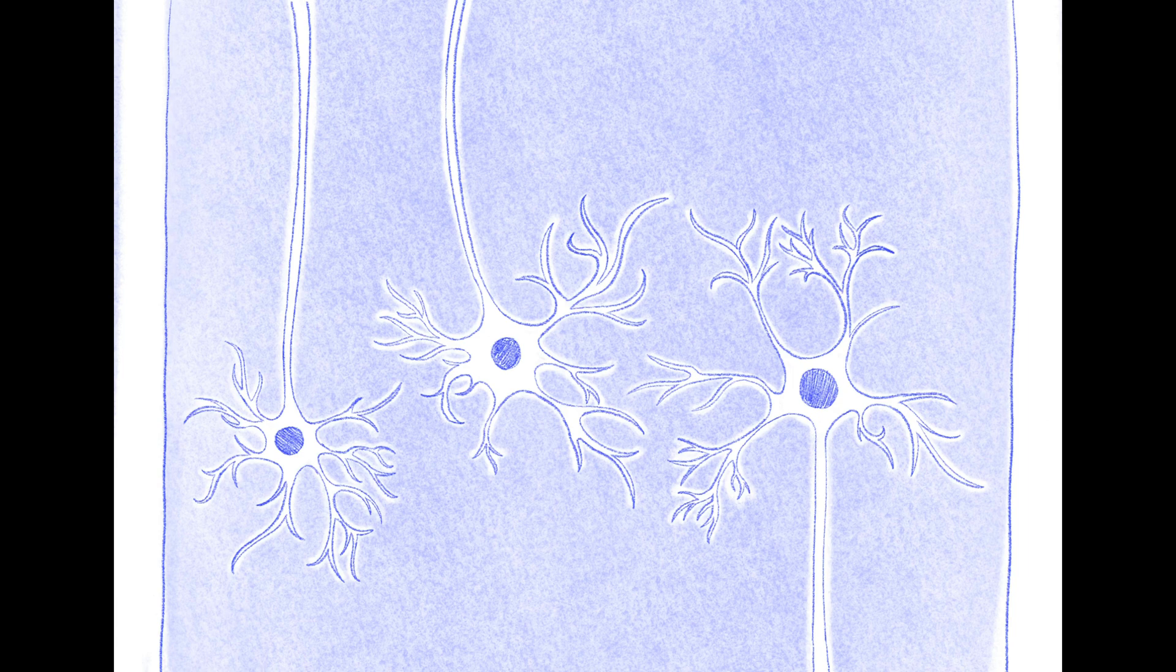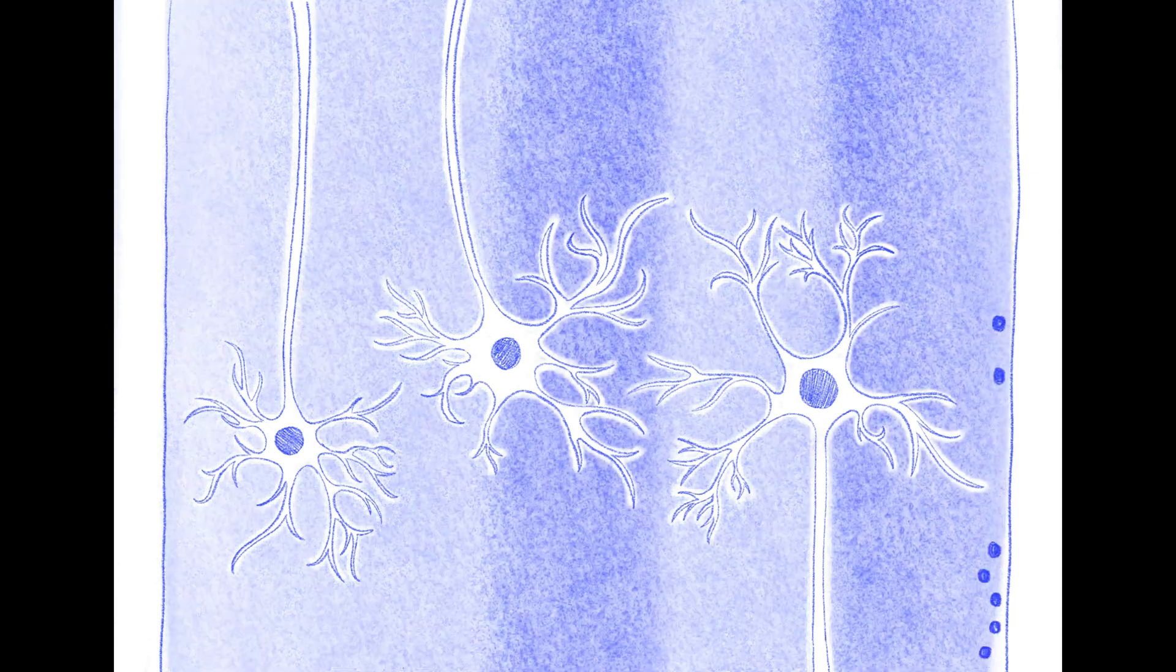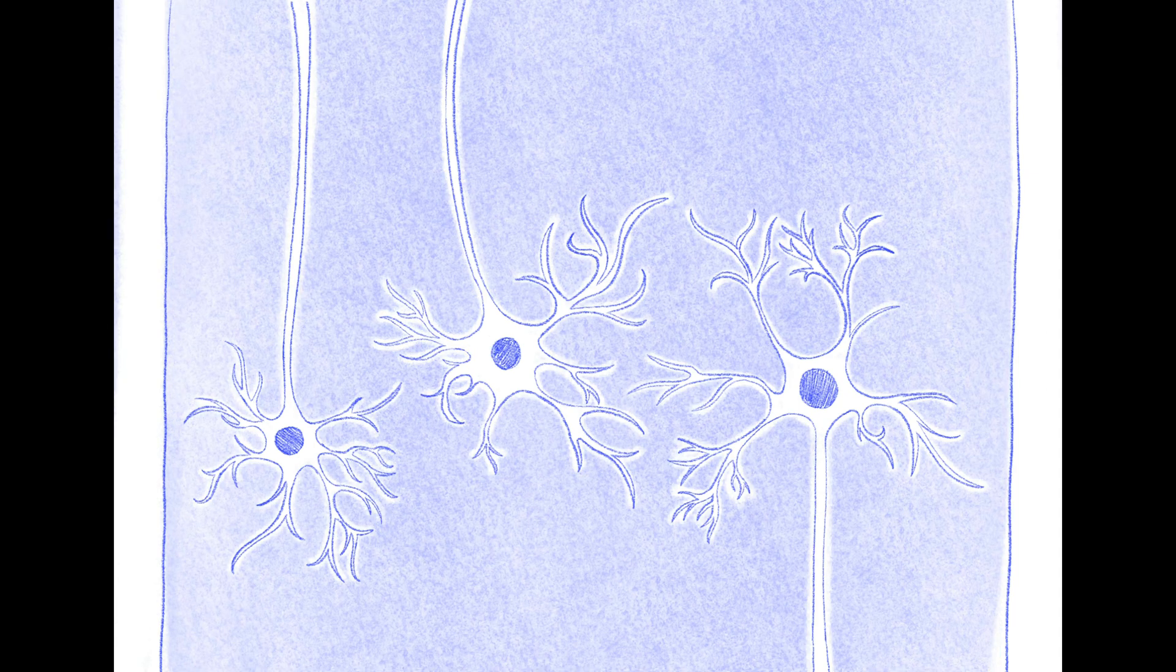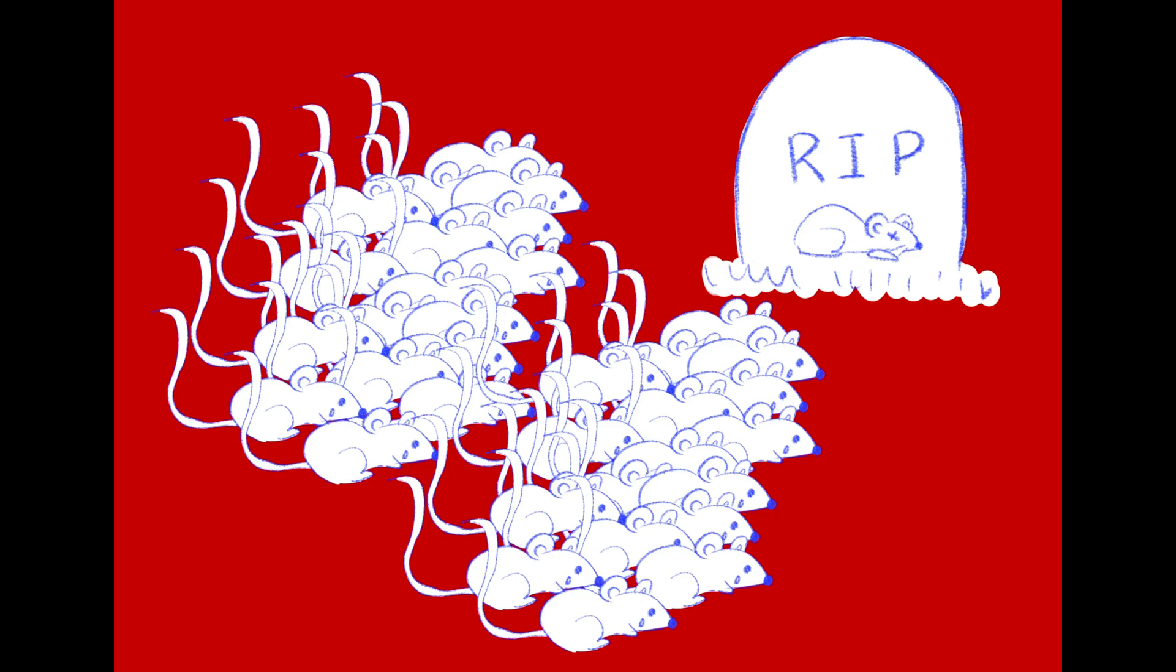The CSF then acts as sort of a lymphatic system to transfer the waste, including any spare neurotransmitters, to the blood. It is for this reason that prolonged sleep deprivation causes metabolic waste in your brain to increase, which eventually impedes neuronal interactions and ultimately results in death.